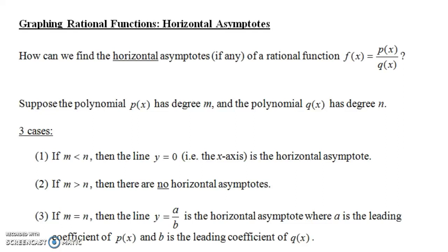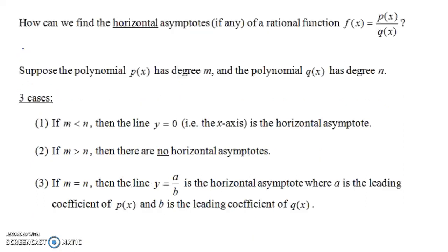In this video we're going to talk about horizontal asymptotes and how to find the horizontal asymptote of a rational function. How can we find the horizontal asymptote, if any, of some rational function f(x) = p(x) / q(x)? Let's suppose that the polynomial in the numerator has degree m and the polynomial in the denominator has degree n. We're actually going to have three cases for horizontal asymptotes, and we'll look at a couple of graphs to see what we mean by a horizontal asymptote.